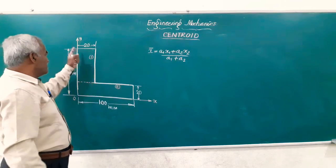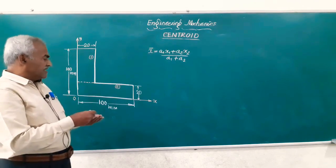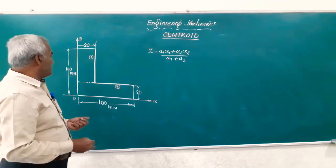This is the formula used to find out the distance of the centroid from the y-axis, that is the x bar formula. In this formula let us find out what these terms stand for.